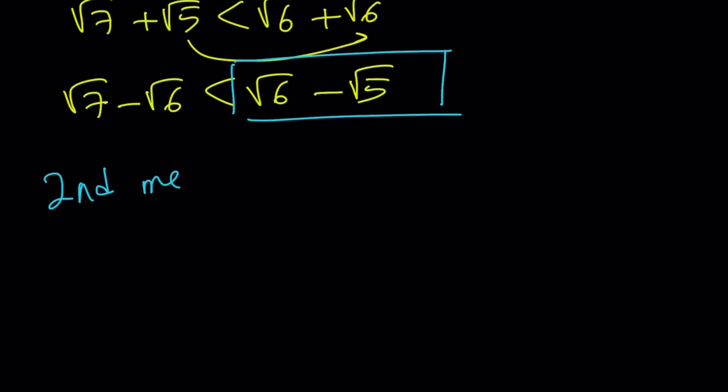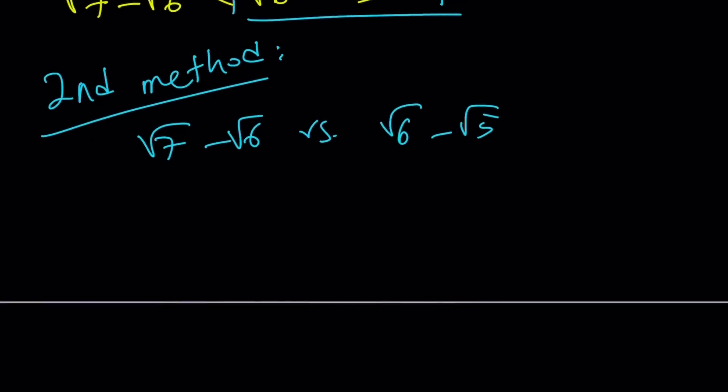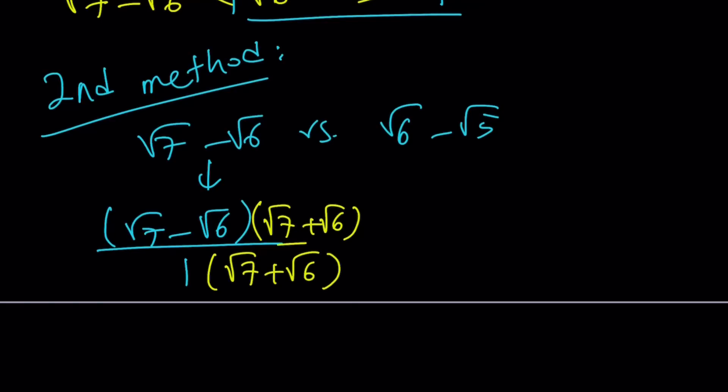All right, second method. For our second method, we're going to compare these two numbers. So we can write versus this, versus that. Now, I'm going to start off with this one. But normally, you know, we rationalize the denominator. This time we're going to write it as this divided by 1, and rationalize the numerator. So here's what we're going to do. Multiply the top by root 7 plus root 6, and do the same thing at the bottom.